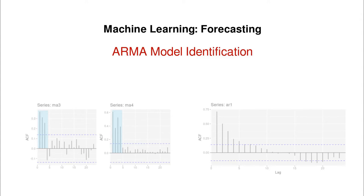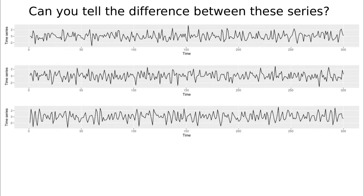Hi there! So in the last video we covered ARMA processes and we have this question in mind. Taking a look at these curves, can you tell the difference between them?